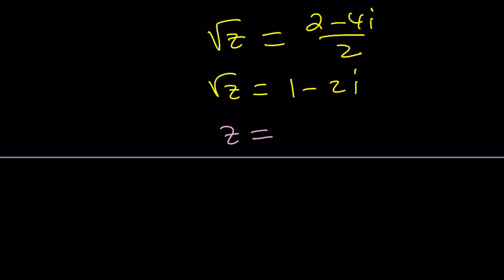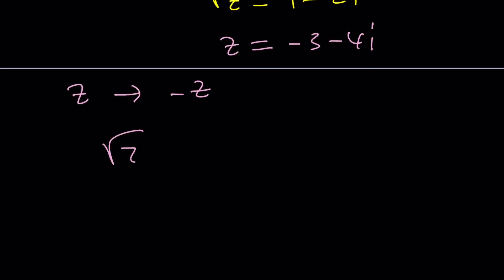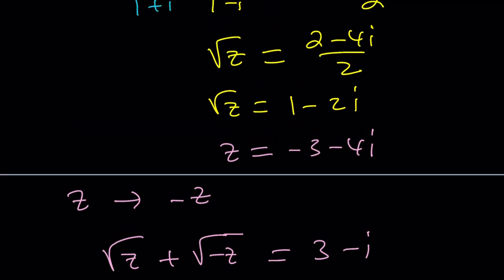If you square this number, you're going to get negative 3 minus 4i. But notice, if z is a solution, then negative z is also a solution. Because if you look at the problem, there is some symmetry. You can replace z with negative z. It's still going to be true. So we got two solutions. From here, 3 plus 4i is also a solution. And that's what we got with the first method.